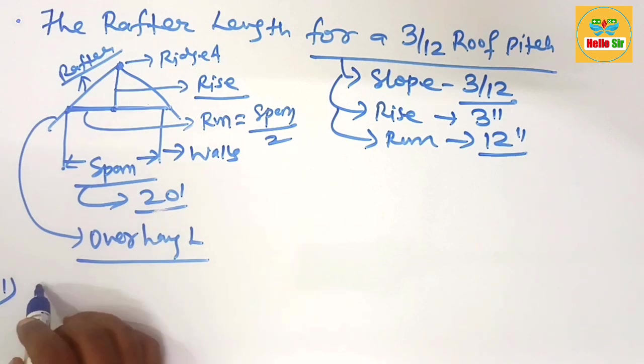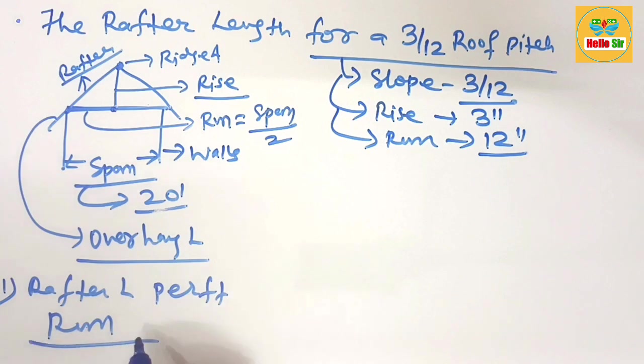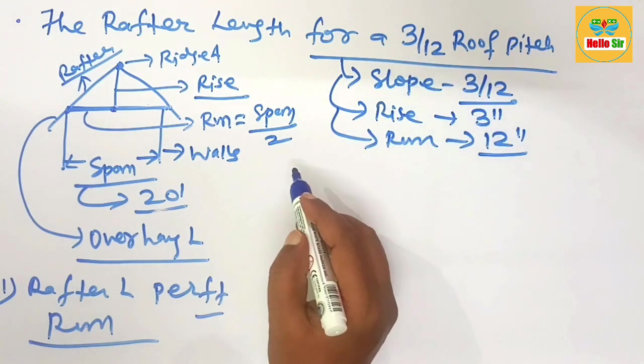First you determine the rafter length per foot of run. What will be the rafter length if the run is 1 foot for a 3 by 12 roof pitch?